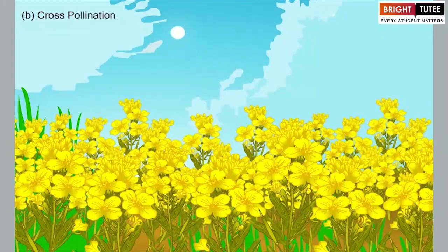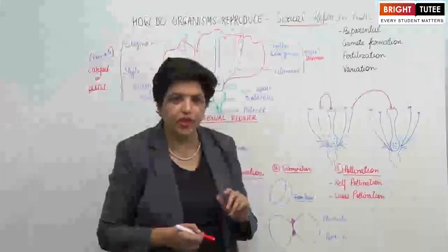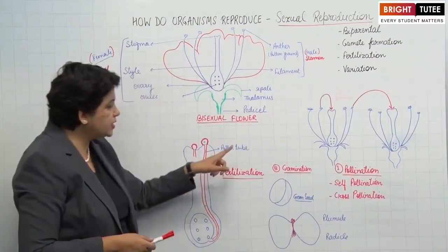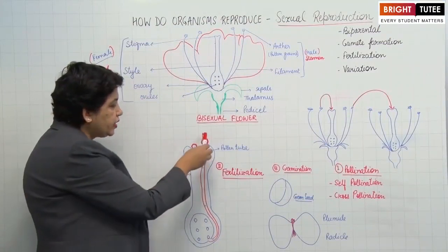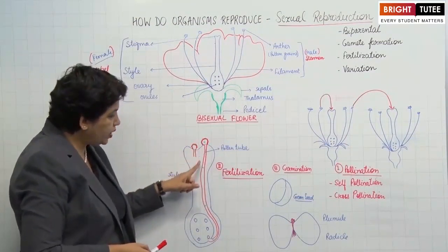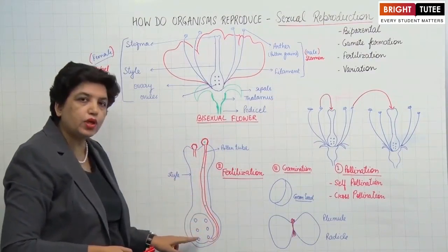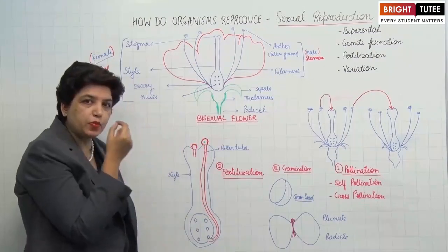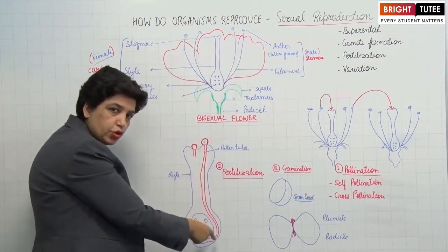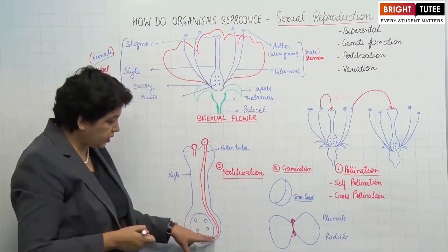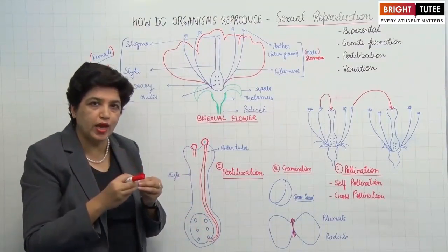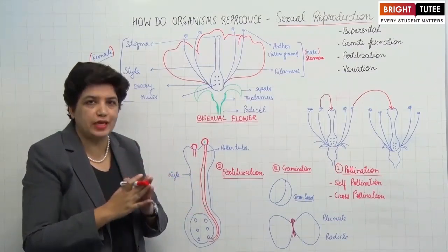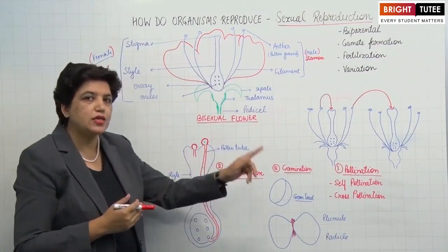After pollination, the second step is fertilization. As the pollen grain falls on the stigma, it starts growing a pollen tube. The pollen tube grows into the style and enters the ovary. Then the male gamete present inside the pollen grain travels through this tube, reaches the ovule, and the male and female gametes fuse together. This process of fusion is called fertilization.